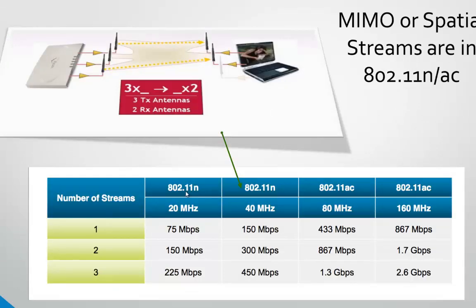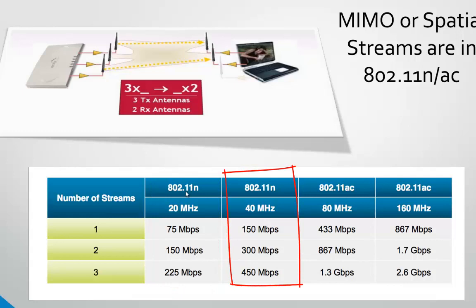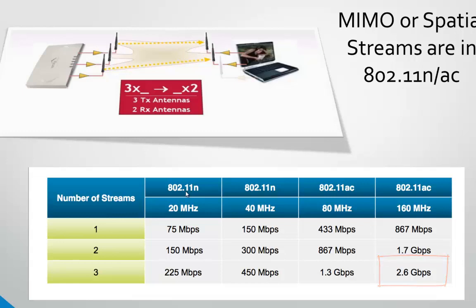Looking at the chart, spatial streams are a great way to bump up speed. In the N standard column with 20 MHz and 40 MHz wide channels, as you go from one spatial stream to another, you really begin to see the tremendous bump in overall data rates. 802.11ac goes up to 2.6 gigabits per second, which is impressive. Keep in mind, battery-dependent mobile devices are not going to take advantage of spatial streams until RF radio efficiency improves enough to not drain the battery significantly.